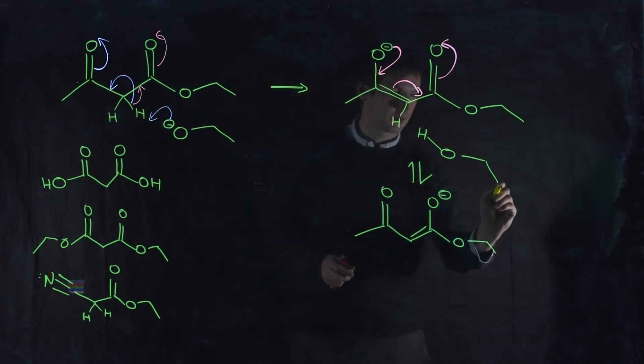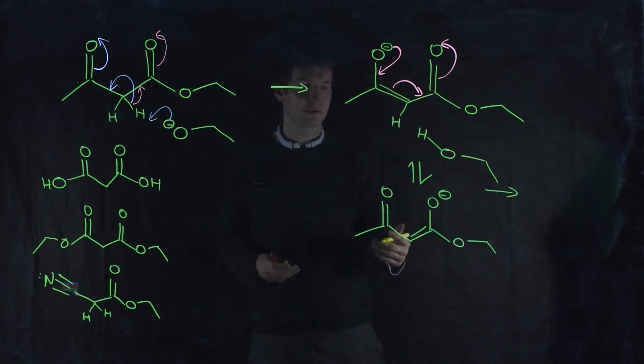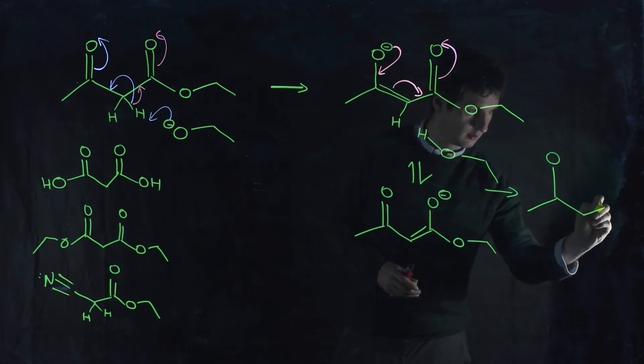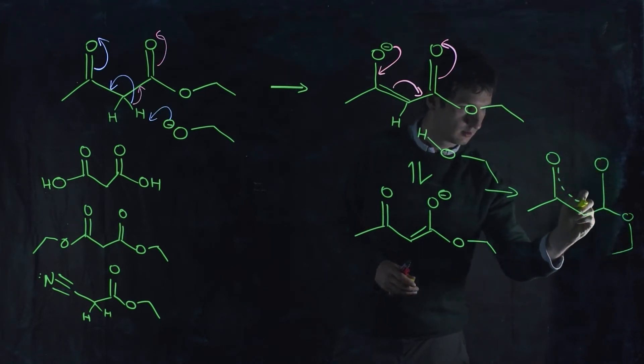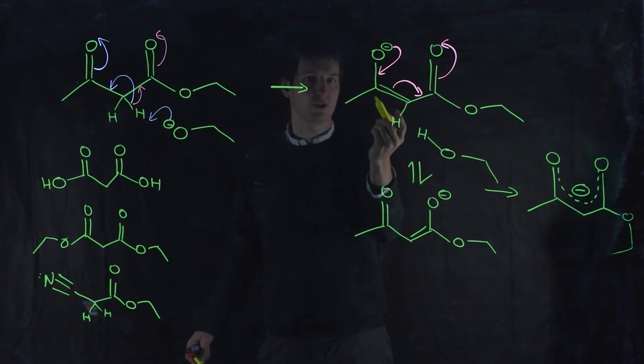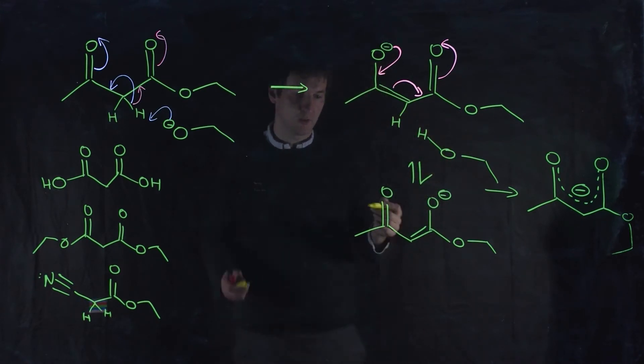So, either form would have been acceptable. Well, they will resonate between the two forms so quickly that you can also draw it out like this. And so, you can begin to see why this is so much better at giving away its proton than the equivalent carbonyl over here. The equivalent hydrogen alpha to a carbonyl, but just alpha to one carbonyl. The equivalent ketone is so much less acidic than these are.